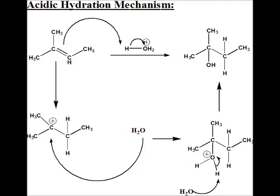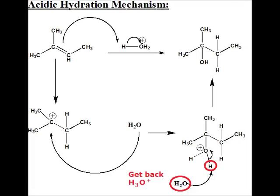This last step is important — a lot of students forget and just slap on an OH when water attacks. That water comes in as water; you have to create the OH by removing the acidic proton. What you'll notice is that we get H3O+ back, and H3O+ is what we started with. The term for something not consumed in a reaction is a catalyst, so this is an acidic catalyst with water producing the hydration of the alkene.